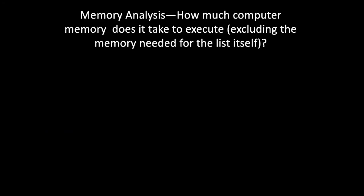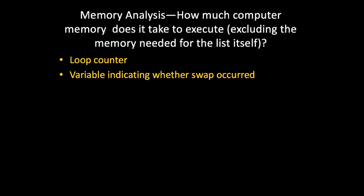In analyzing the memory usage of Bubble Sort, we need to consider values other than the input list which we need to store. First, we need to know what position of the list we're at in the loop. We also need to know whether we made a swap during a given iteration. This is the minimum amount of values we need to store. We can express the memory usage as 2 times n to the 0. We drop the constant coefficient 2, leaving n to the 0, which equals 1. So we conclude that the memory usage is O of 1 — Bubble Sort works in place.